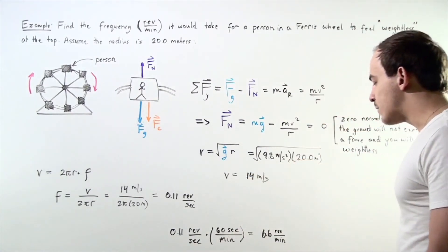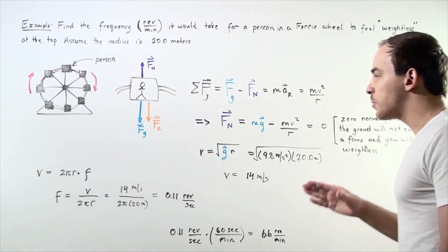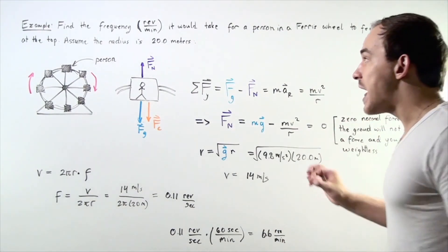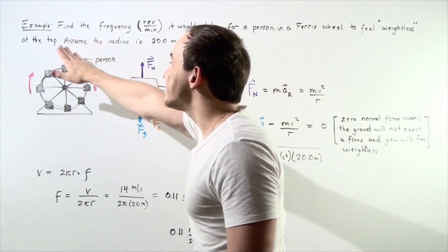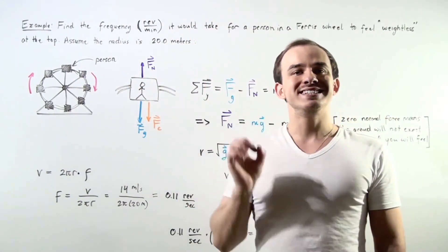The seconds cancel and we're left with approximately 6.6 revolutions per minute. So our frequency of this much will ensure that our normal force at the top of our Ferris wheel, at the top of the arc, reads zero.